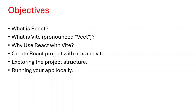What is Vite? Vite is a modern build tool that improves the development experience. It is designed for faster and more efficient development compared to traditional methods. Vite optimizes your code for production, resulting in smaller and faster builds.